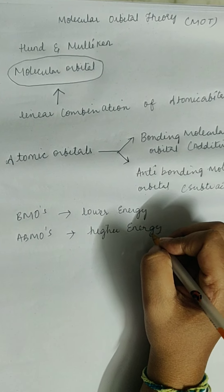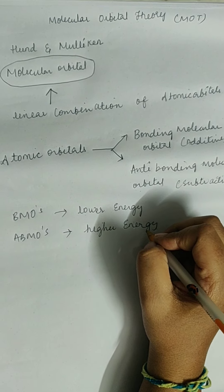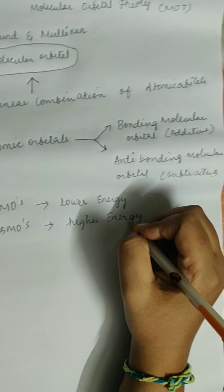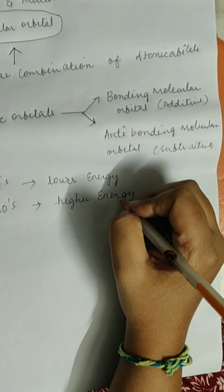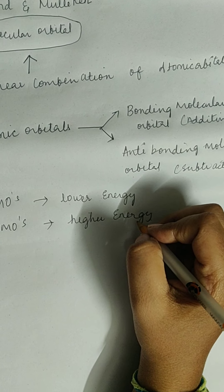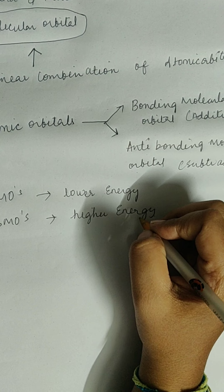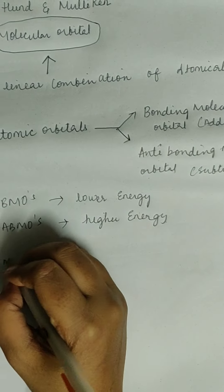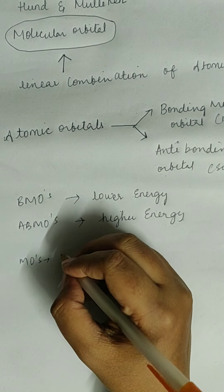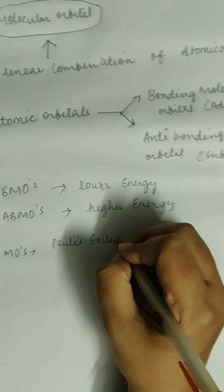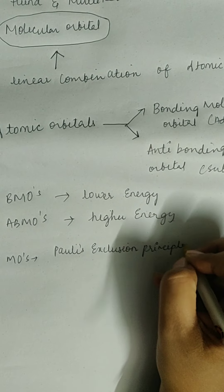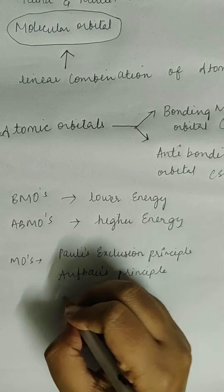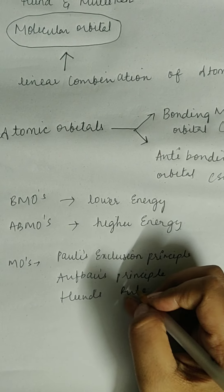An atom is unicentric — it has only one center — whereas a molecule is polycentric, having many centers. If all the electrons of atoms A and B are considered to move along the entire molecule under the influence of all the nuclei, those electrons are redistributed in the molecular orbitals as per Pauli's exclusion principle and Hund's rule of maximum multiplicity.